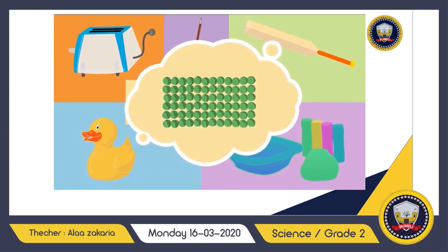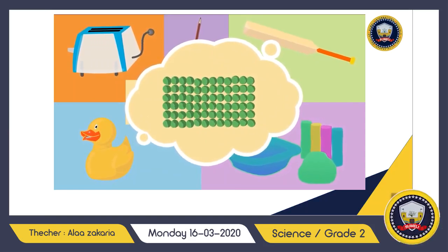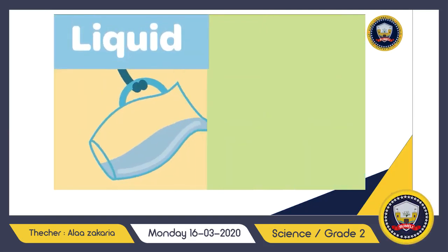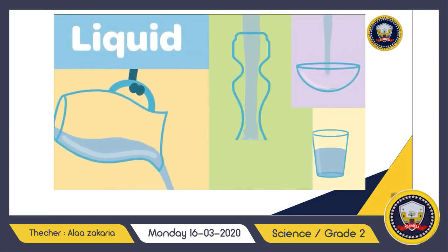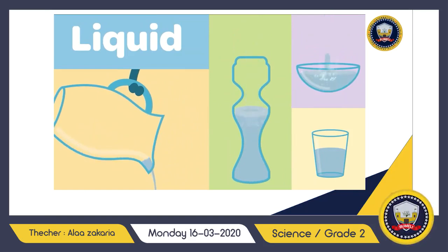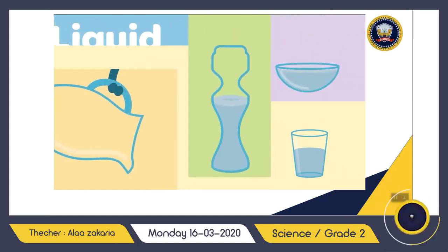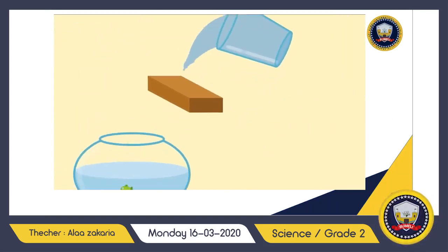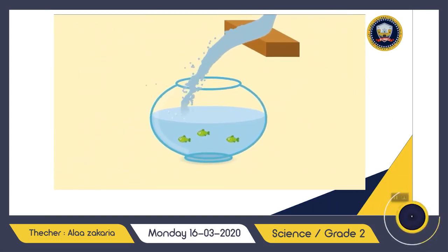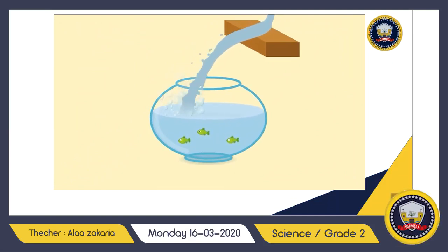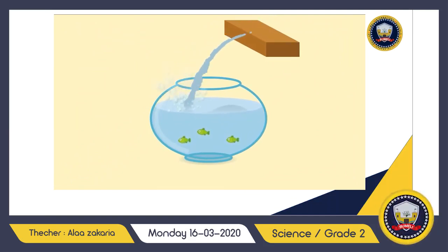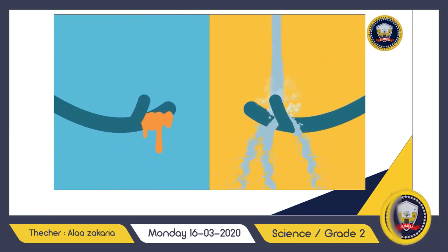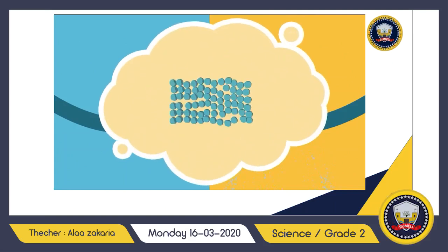A solid means that the atoms are packed really close together so they can't move, which means the object holds its shape. A liquid, on the other hand, will always change its shape to fit the container it's put in. A liquid can flow, which means it can be poured. Liquids are sometimes thick like honey or thin like water, but no matter what, they'll always flow.